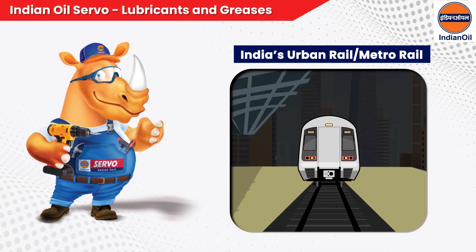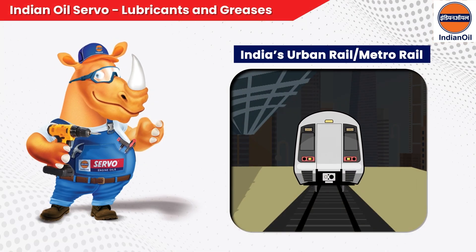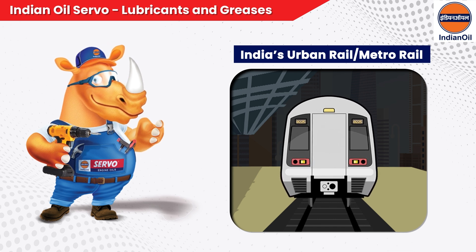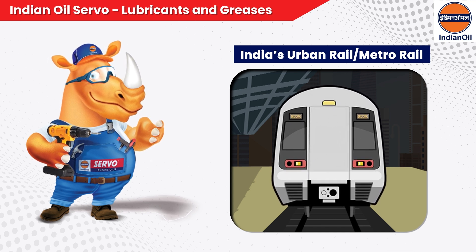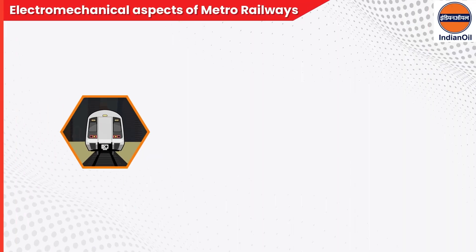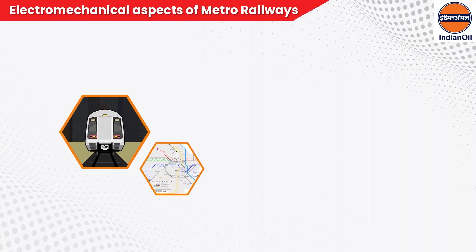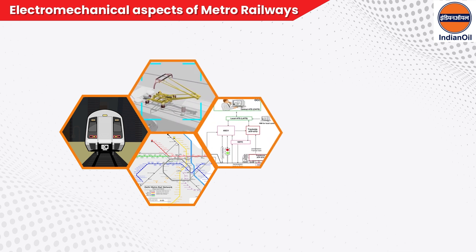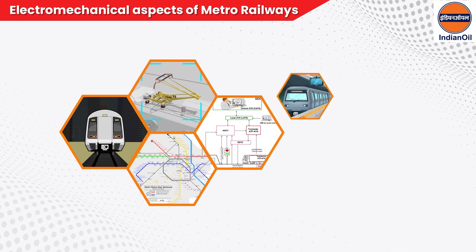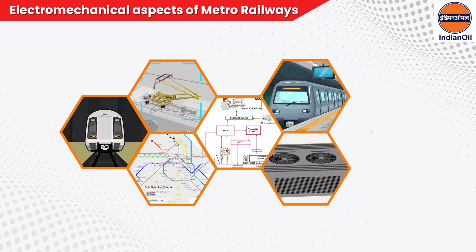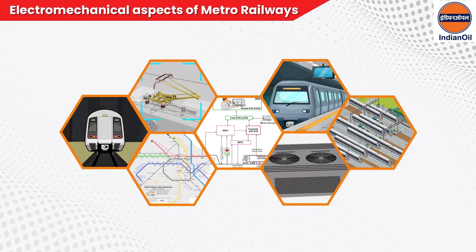India's urban rail, sometimes referred to as metro rail, has experienced significant growth in recent years. Let us look at the general functioning and electromechanical aspects of a metro rail system. The seven primary electromechanical engineering aspects of metro rail systems include the following.